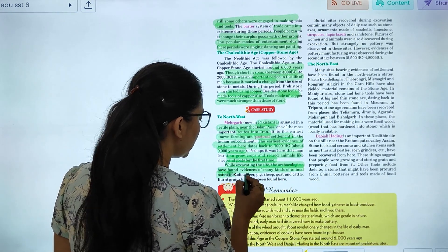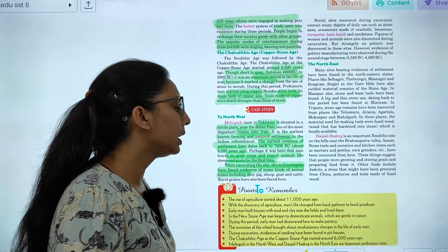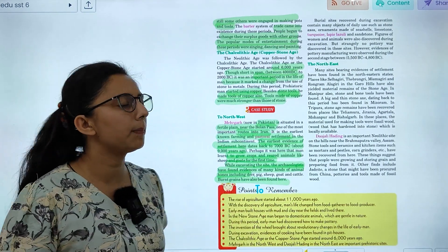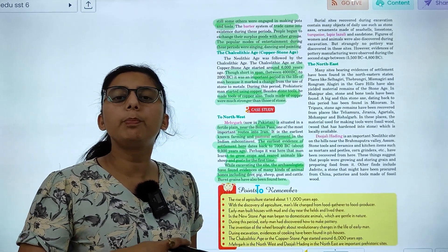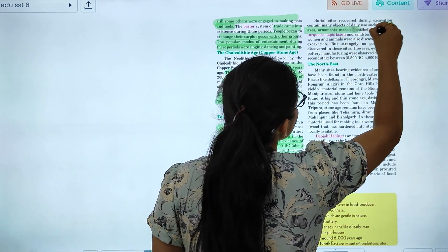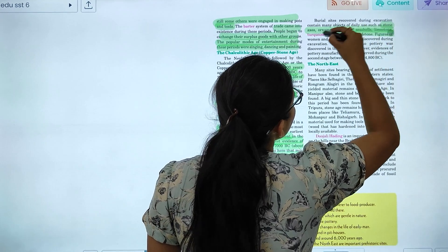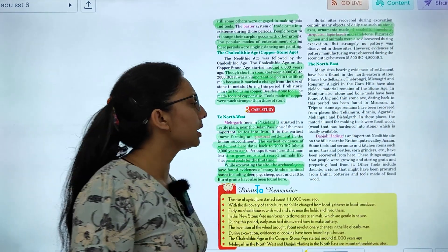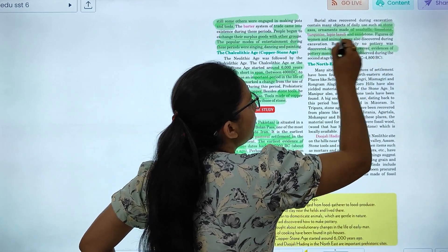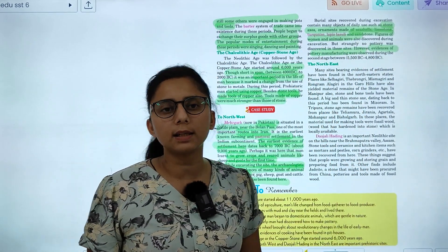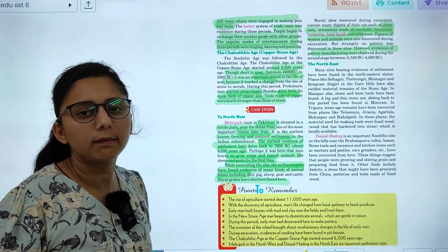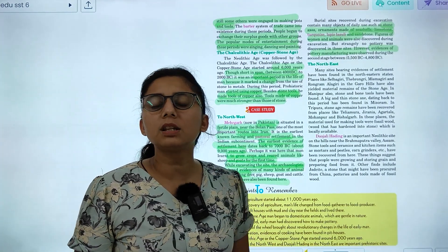While excavating the site, the archaeologists found evidence of many kinds of animals, such as bear, pig, goat and cattle. Burnt grains we have seen. Some burial sites we have seen, such as stone axes, ornaments, and stone figures of human and animals were discovered. Pottery was discovered in this period and evidence of pottery manufacturing was observed in the second phase, which is 5,500 BC to 4,800 BC.